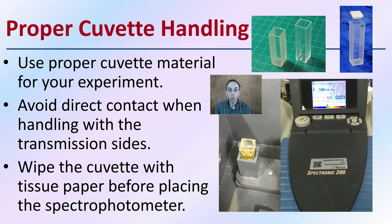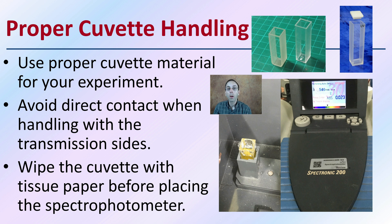The clear sides are where the light will be projecting through, so we want to avoid contact with those. We want to be sure that before placing the cuvette into the machine, we're wiping it with tissue paper to ensure there's nothing on the outside that would conflict with getting an accurate reading of our sample.